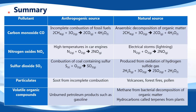Here's a summary of pollutants, their anthropogenic sources, and natural sources. Carbon monoxide: anthropogenic source is incomplete combustion of fossil fuels; natural source is anaerobic decomposition of organic matter. Nitrogen oxides: anthropogenic source is high temperatures in car engines; natural source is electrical storms or lightning.